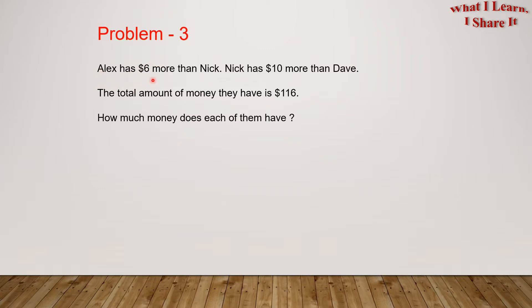Alex has $6 more than Nick. Nick has $10 more than Dave. The total amount of money they have is $116. How much money does each of them have?